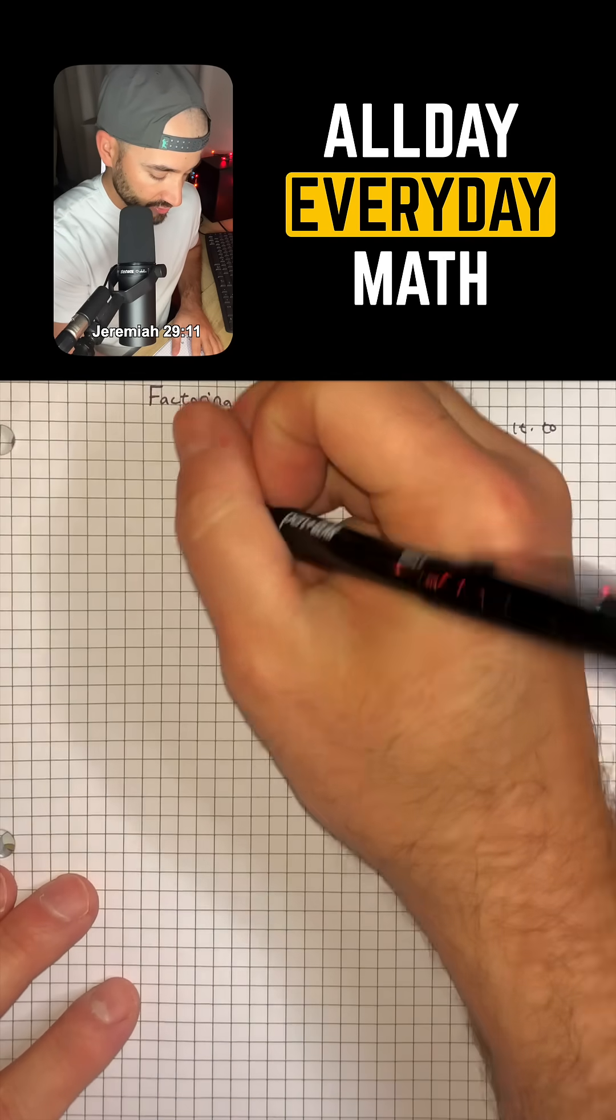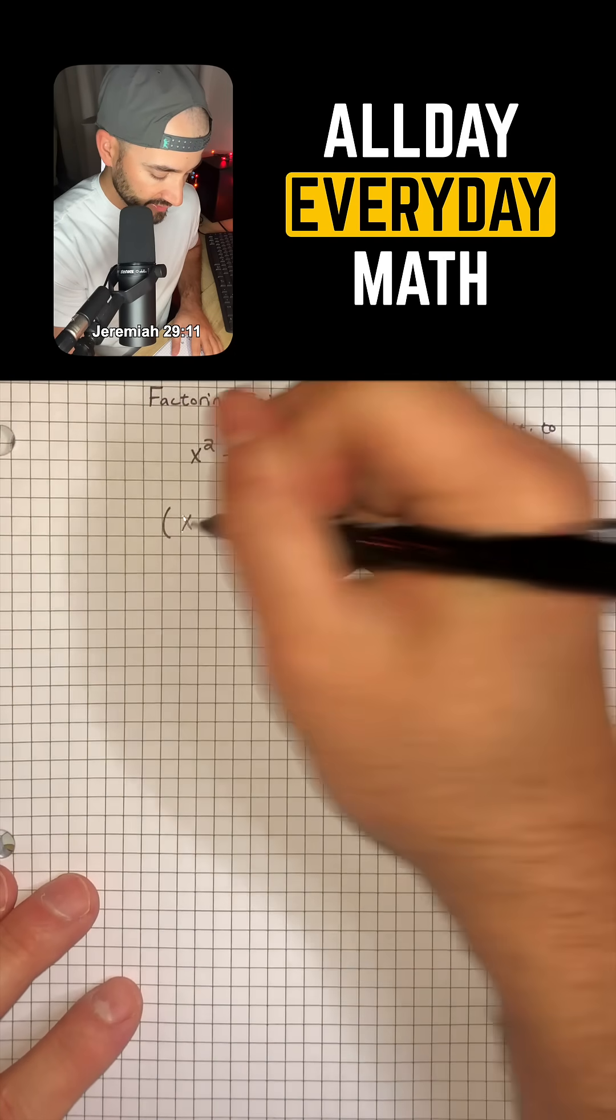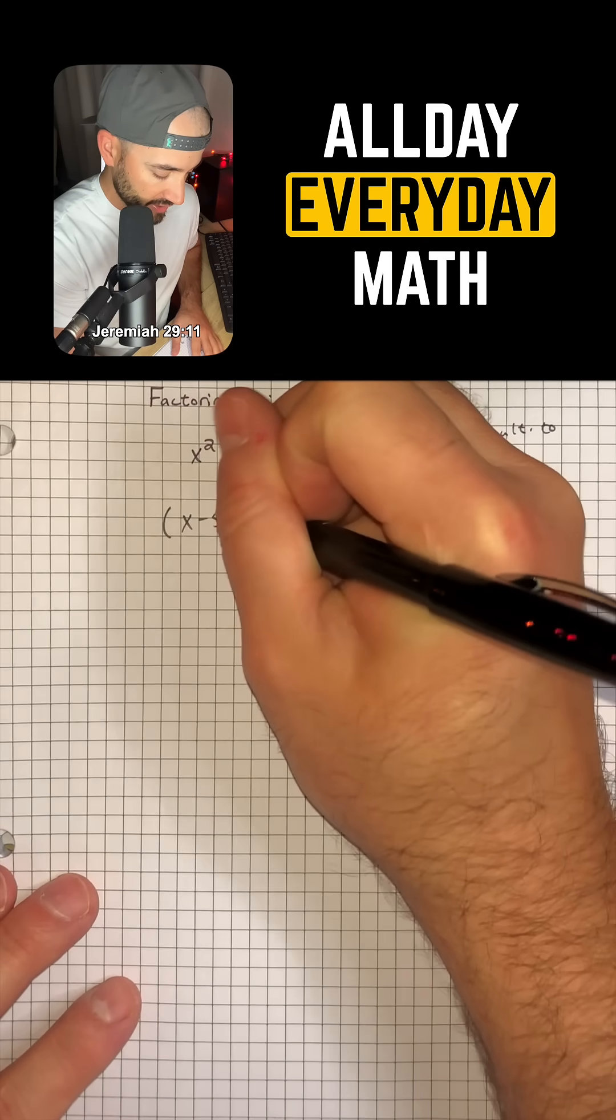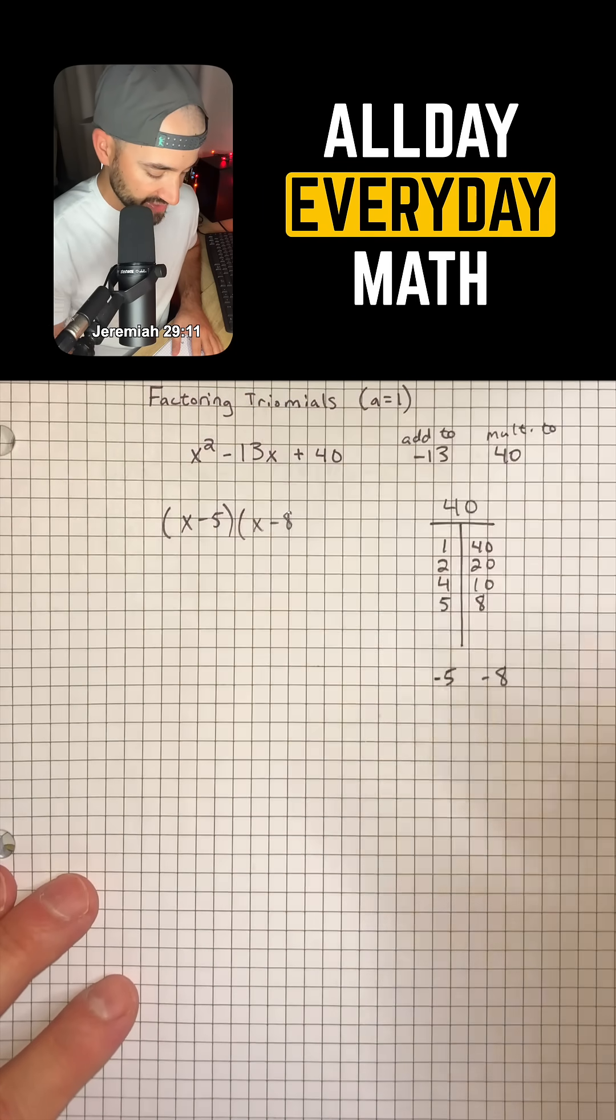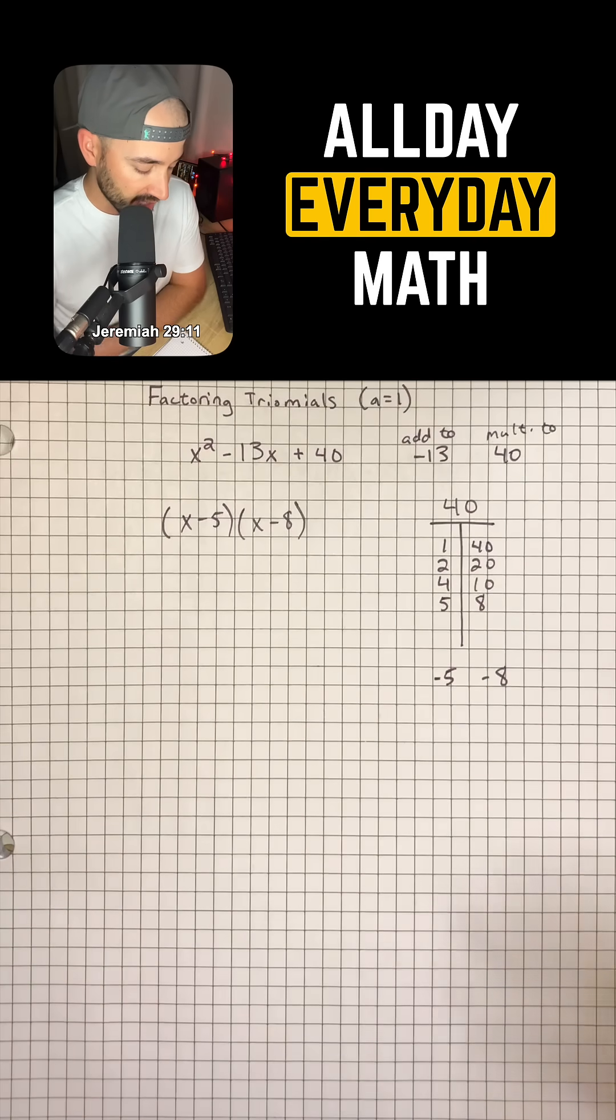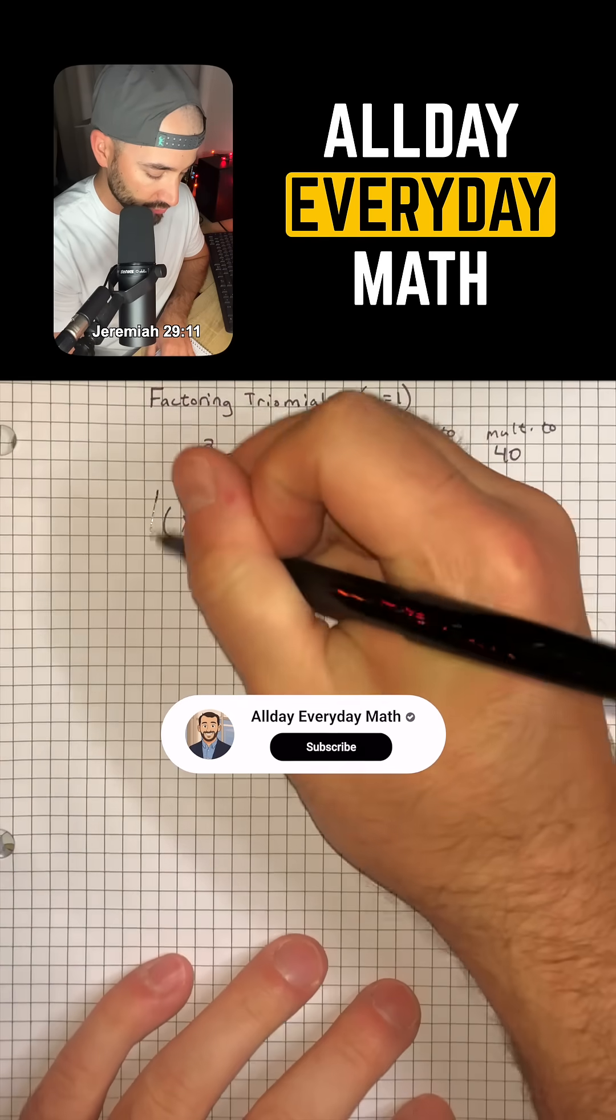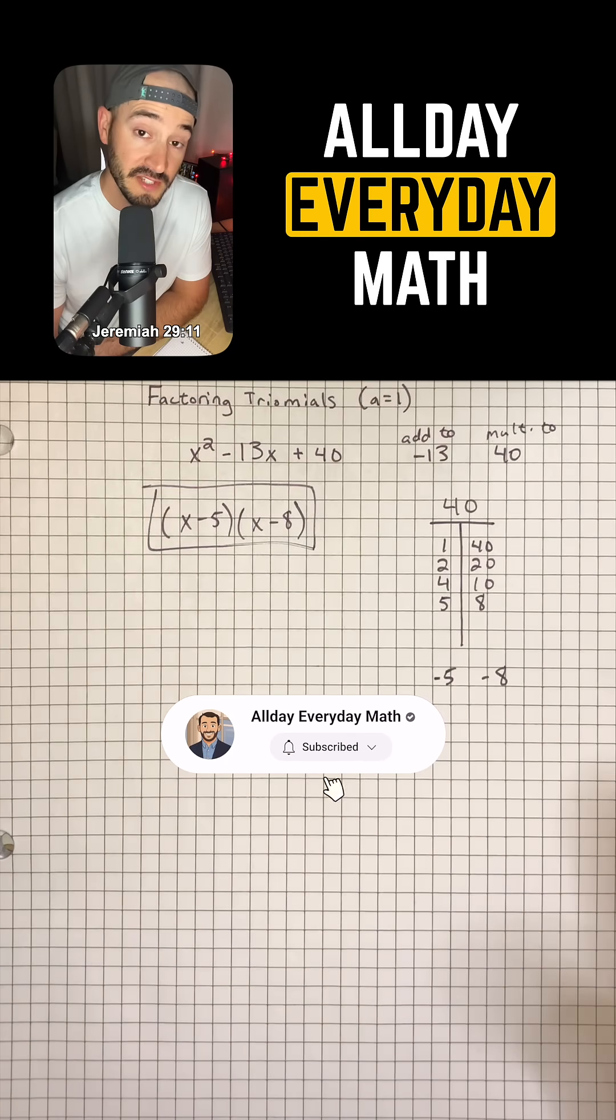So that means once we factor we're going to have x minus 5 and another set of parentheses that is x minus 8. And so that is all you have to do to factor a trinomial. That would be our answer and I hope this video was helpful.